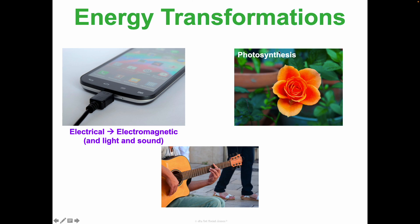A plant does photosynthesis, taking in solar or radiant energy from the sun and storing it in the bonds of glucose (C₆H₁₂O₆) — so it converts solar to chemical energy. Then consumers like us eat plants or animals that ate plants, take that chemical energy in glucose, and convert it into chemical energy in the form of ATP, which our bodies can actually use. A guitarist moves their fingers across chords and through that movement creates music — kinetic energy transforms into sound energy.